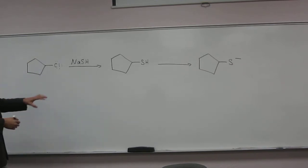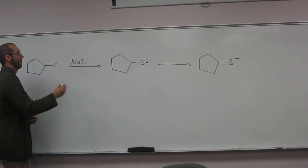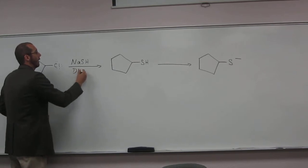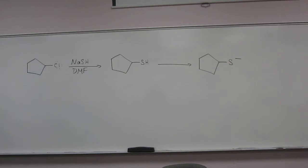Okay. And then will we have to put something down here? What would we put? DMF. Why would we put that? A solvent. What kind of solvent? Polar solvent. Polar? Aprotic. No, a polar aprotic solvent. Okay, those are the types of solvents we need for SN2 reaction.